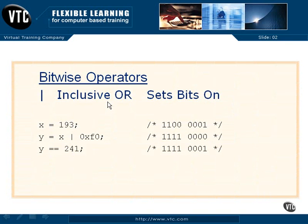This is called an inclusive OR, and it is used to turn bits ON in a value. We start with our 193 — binary 1100 0001 — and Y is equal to X OR'd with F0.